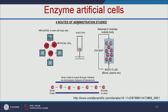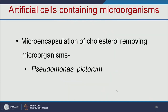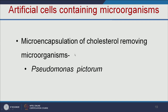There are four routes of administration for enzyme artificial cells: they can be implanted to work with body cells, injected, retained in a chamber outside the body where the patient's body fluid passes through for purification and returns to the patient, or taken orally and removed by the excretion process. Not only cells and enzymes — we can also encapsulate bacteria. For example, microencapsulation of cholesterol-removing bacteria, Pseudomonas pictorum, can be used to remove cholesterol from our body.